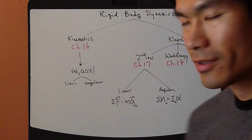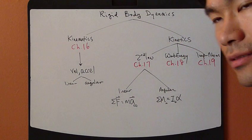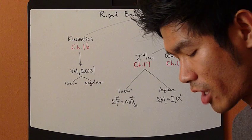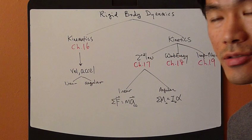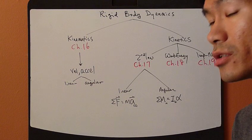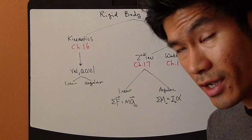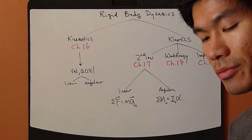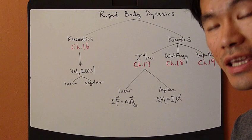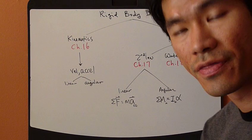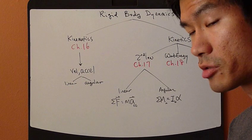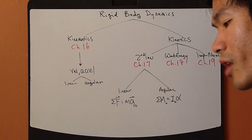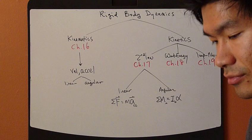Let's get into rigid body dynamics. So far, we've only been talking about particle dynamics — particle kinematics, which is chapter 12, and then particle kinetics, which is chapters 13, 14, and 15. We talked about Newton's second law method, work-energy method, and the impulse-momentum method. Now let's get into the second big category of object.